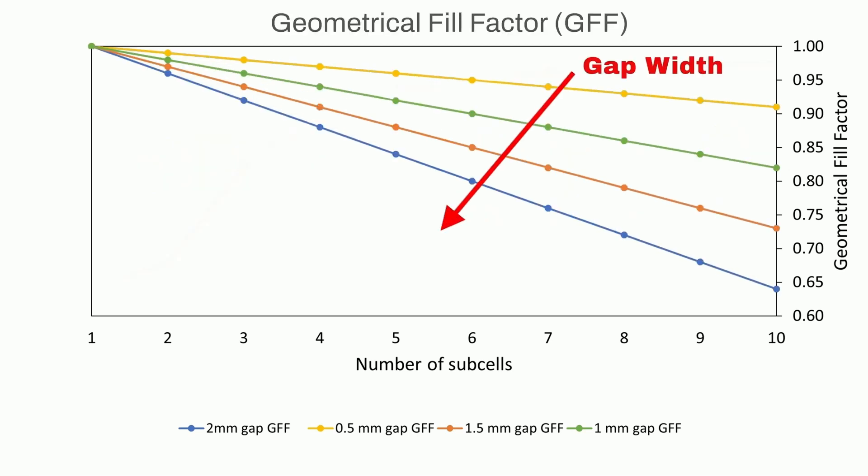More sub-cells lead to lower GFF values, which can be largely compensated by minimizing the width of the interconnection gap. As a result, the solar panel has the potential to generate more electricity overall.